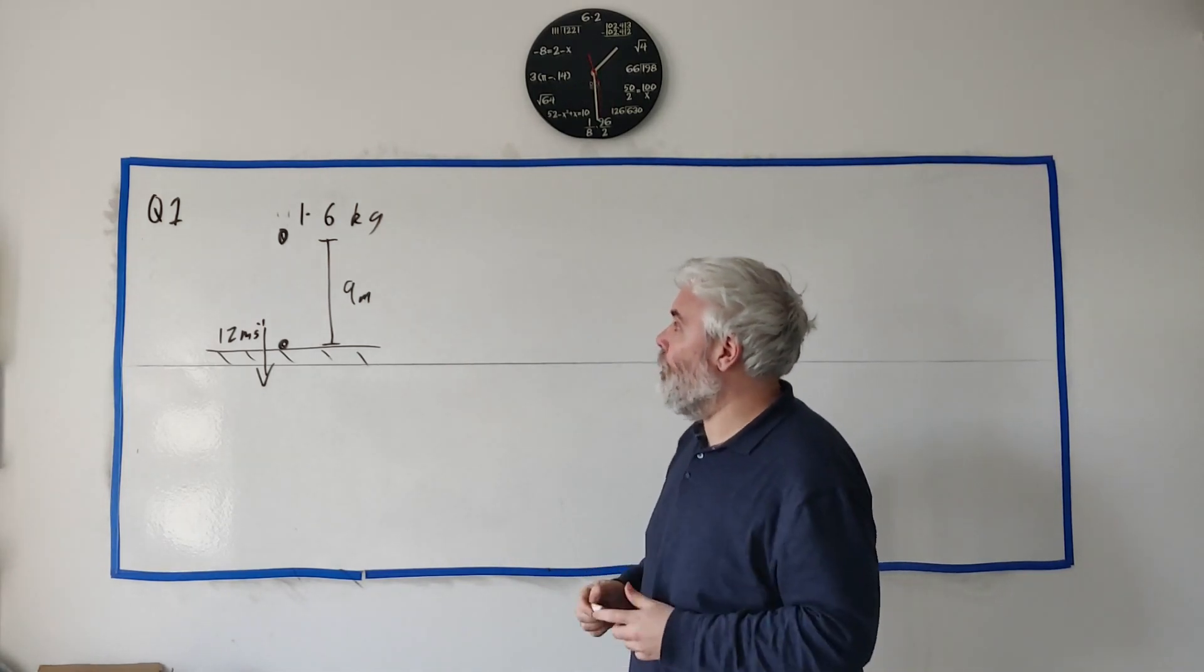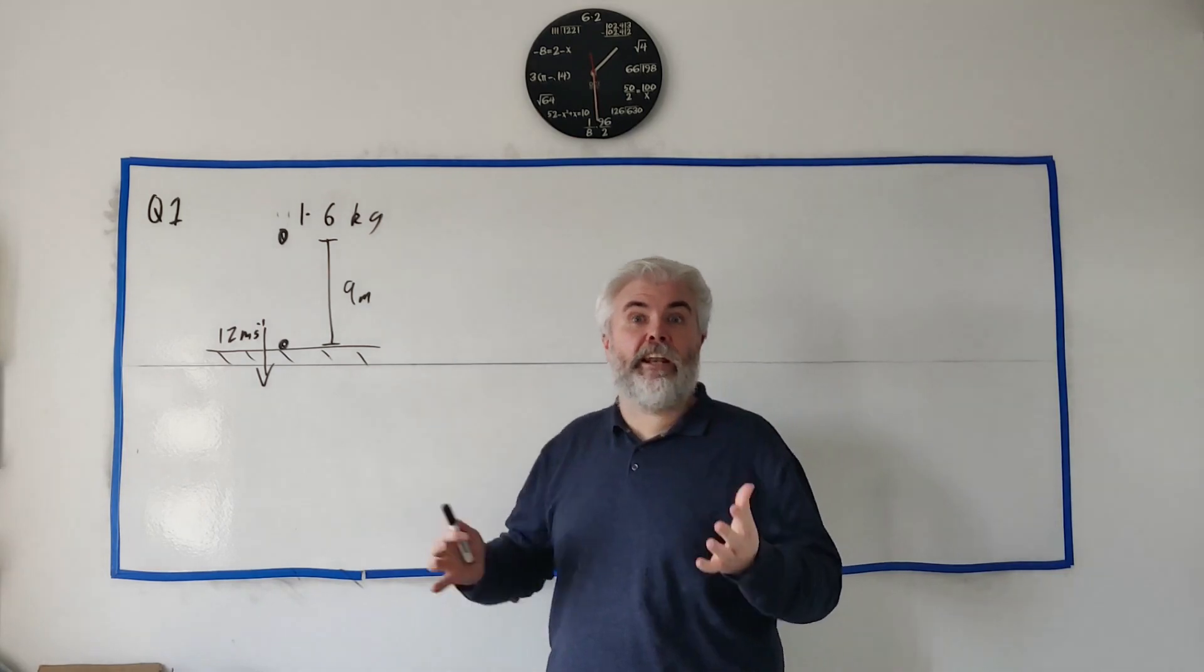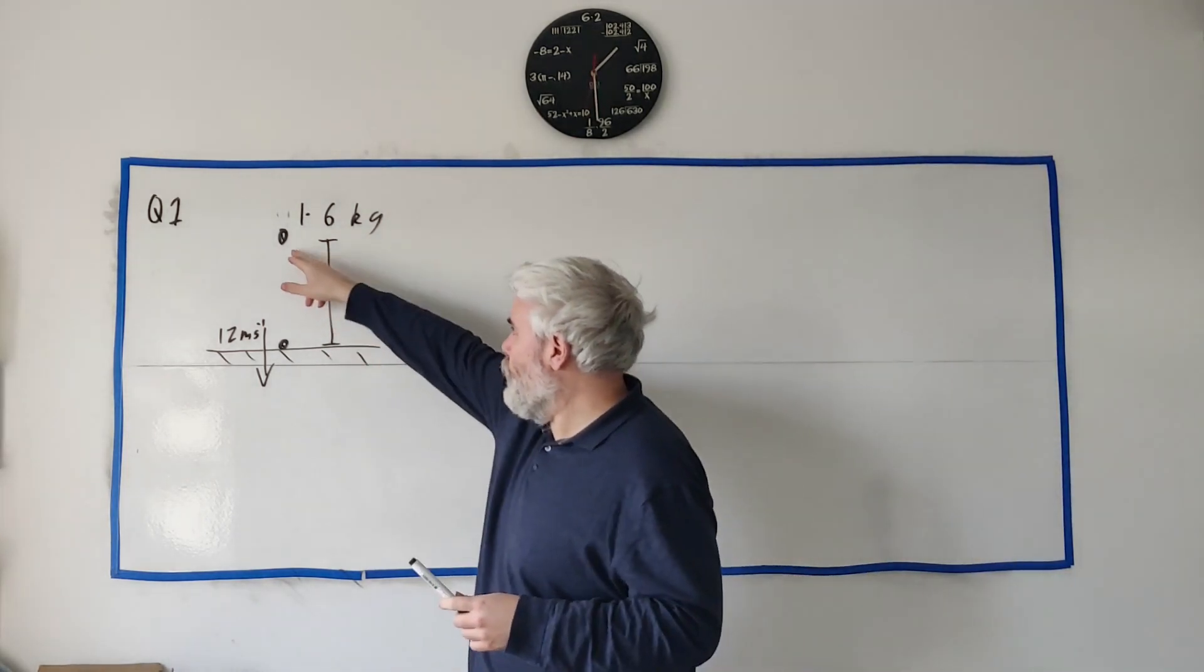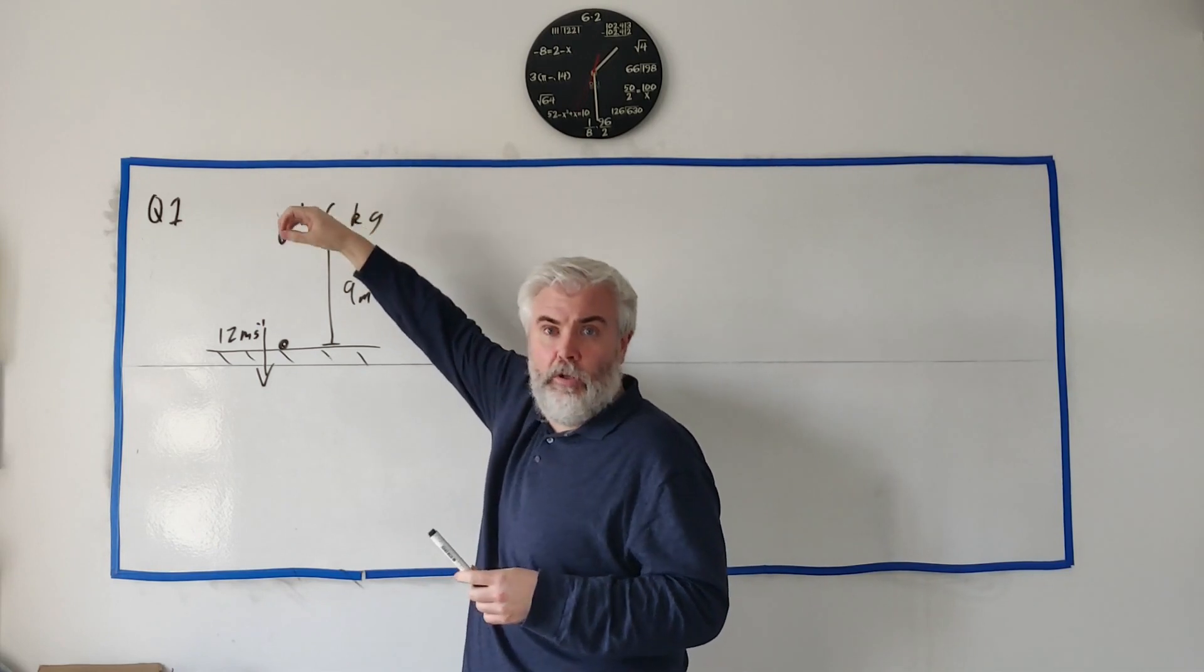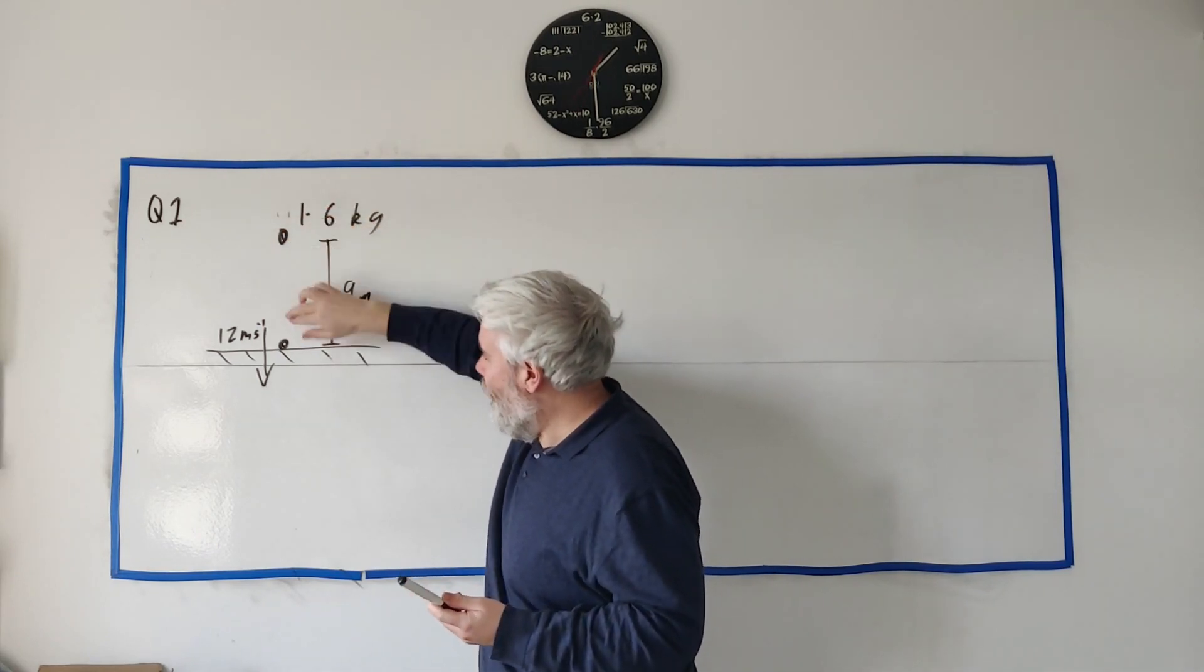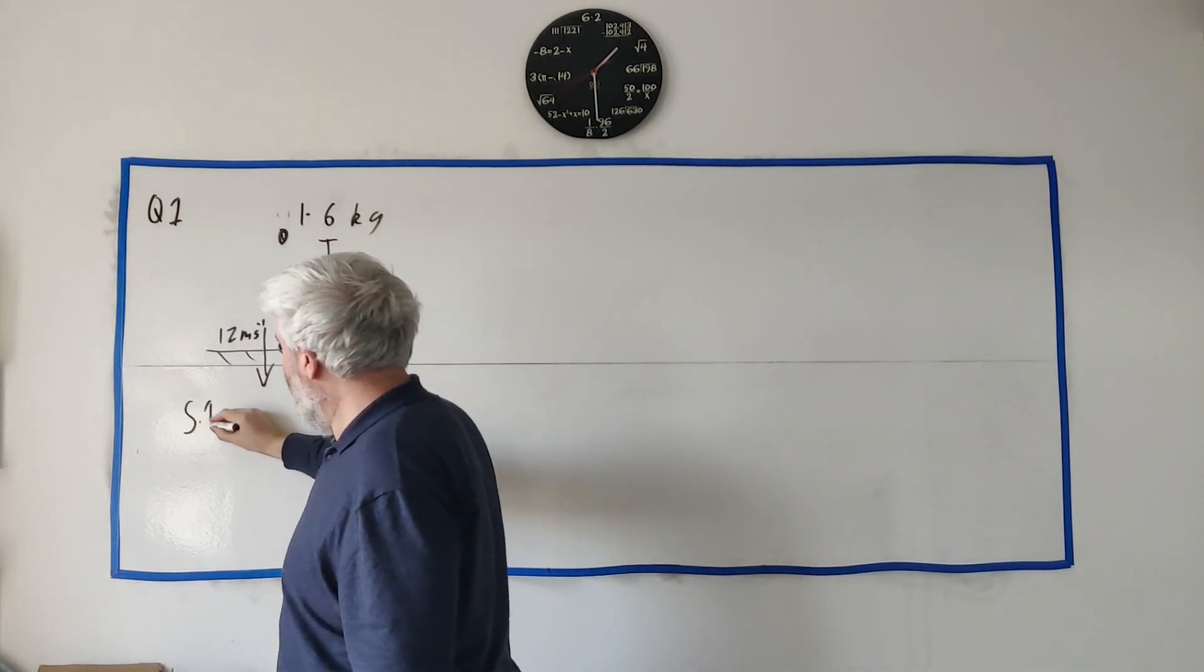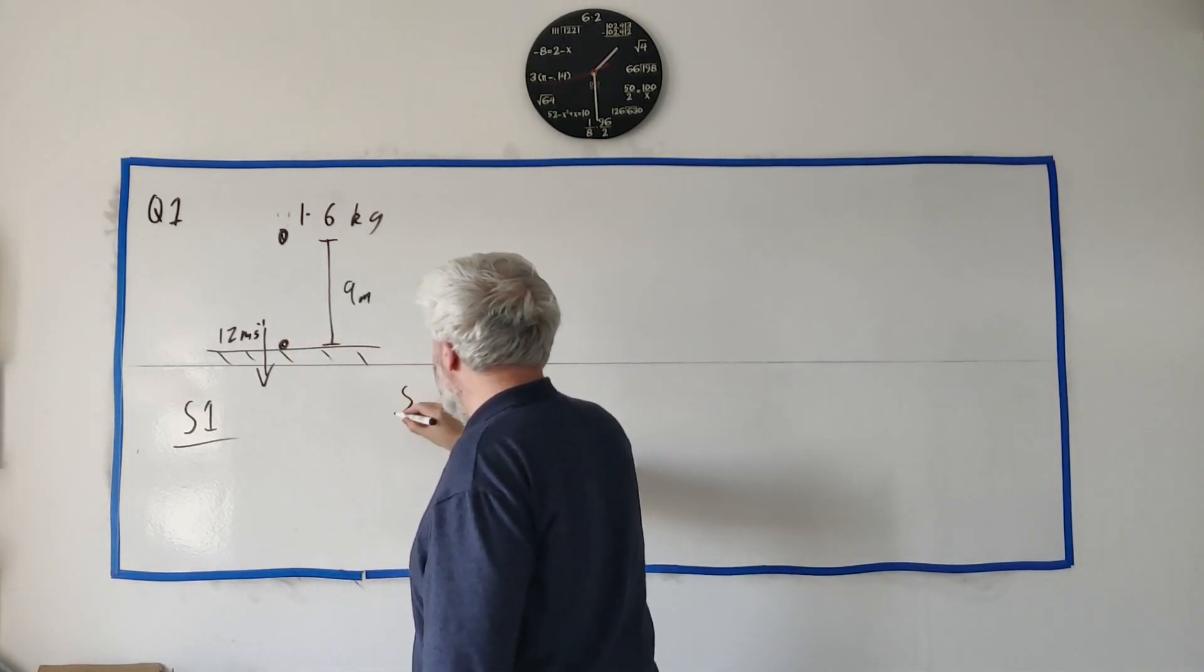The first way is to think of the energy in the system. I would think of it as two states which I've drawn here - the first state was when the particle was up here and the second state is when it was down here.